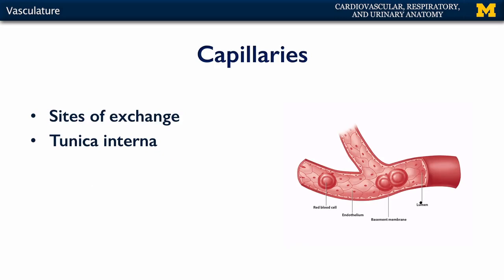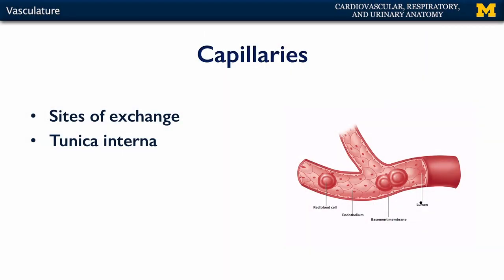Capillaries themselves, as sites of exchange, are remarkably simple. They consist of two layers: an endothelium of simple squamous epithelia supported by a basement membrane — those two layers correspond with the tunica interna of the artery. The capillary is generally about 8 to 10 micrometers in diameter, approximately the diameter of an erythrocyte or red blood cell. So red blood cells typically move through capillary beds one at a time, with ample opportunity to unload oxygen, pick up carbon dioxide, and participate in that exchange.